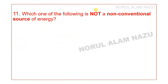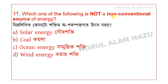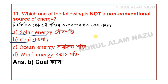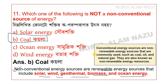Which of the following is NOT a non-conventional source of energy? Options: solar energy, coal, ocean energy, wind energy. Non-conventional energy sources are renewable and include solar, wind, geothermal, biomass, and ocean energy. Coal is a conventional, non-renewable energy source — so coal is the correct answer.